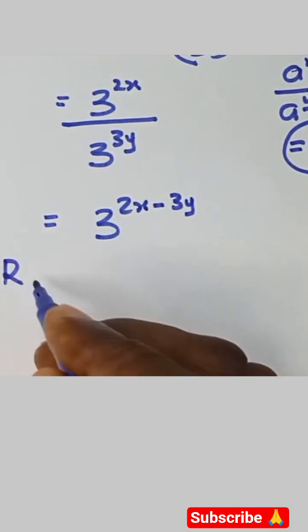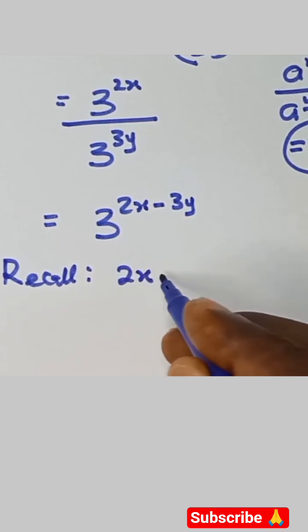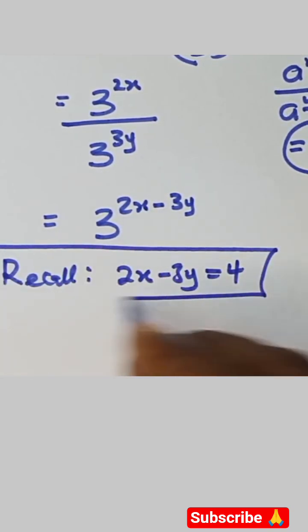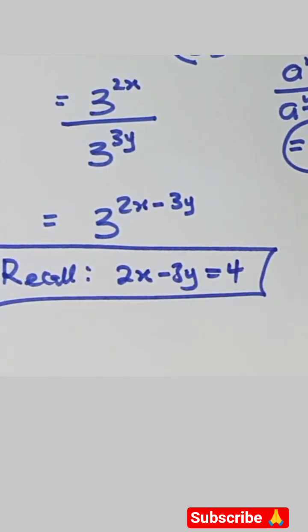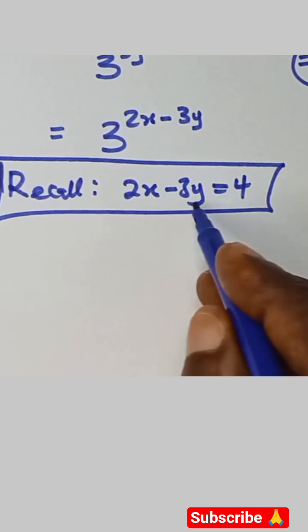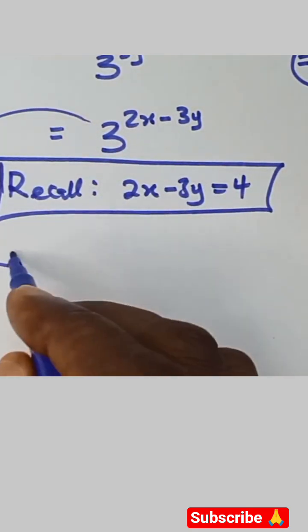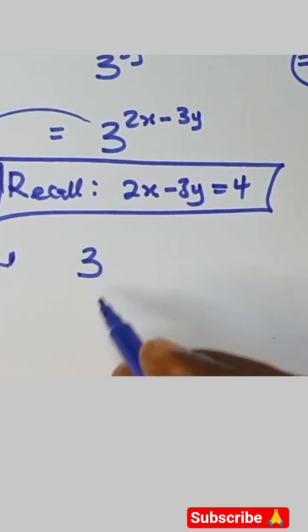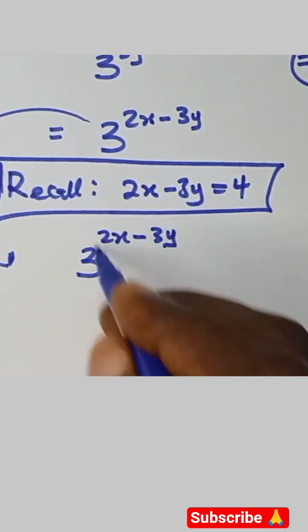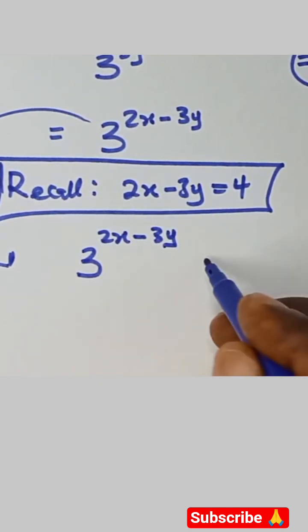Now let's recall that 2x minus 3y equals 4 — that's our equation. So anywhere we see 2x minus 3y, we replace it with 4. We have 3 raised to power 2x minus 3y, and since 2x minus 3y equals 4, we substitute that in.